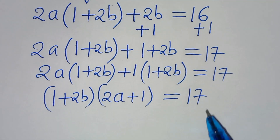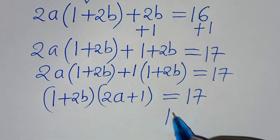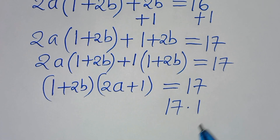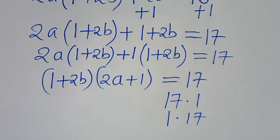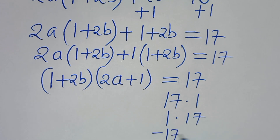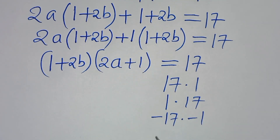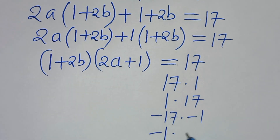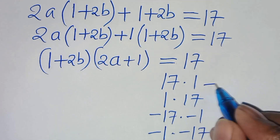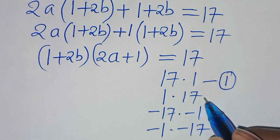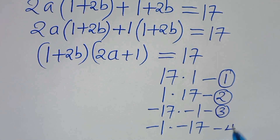The next step is to get the prime factors of 17. So we have: 17 × 1, 1 × 17, −17 × −1, and −1 × −17. So in this case we have 4 cases: case 1, case 2, case 3, and case 4.